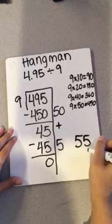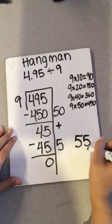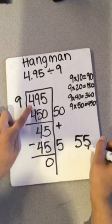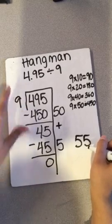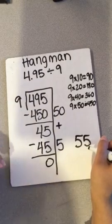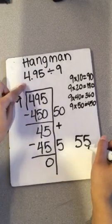But it's not 55 as an answer. It would be 55 whole numbers if I was doing 495. But when you do the Hangman, you pretend the decimal is not there until the very end when you count your place values.